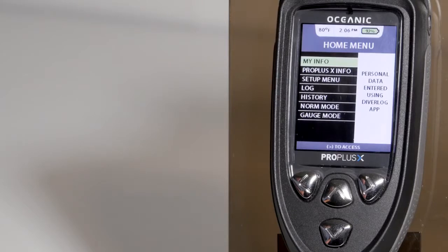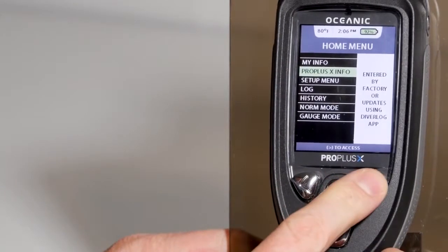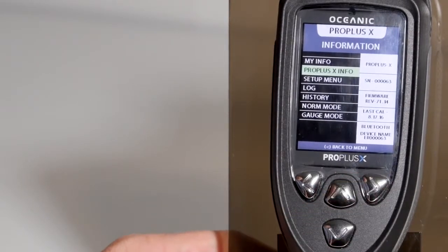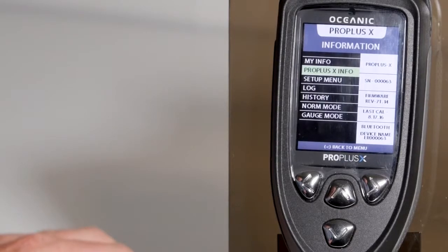From the home menu, you have the ability to see My Info, which can be set using the eDiver app. You can see the ProPlusX Info, which will show the serial number, the firmware that's inside, the last time that was calibrated. It will also show the Bluetooth information.